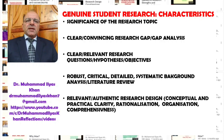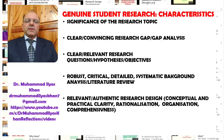Once this is clear, the next important thing that should be there in genuine student research is the clarity and relevance of the research questions, hypotheses, and objectives. In most cases there are research questions around which research theses or research reports revolve; in other cases there are research hypotheses, and in most cases there are research objectives. These should be clear and relevant to the topic.